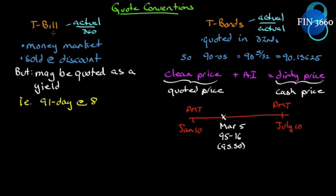Now let's look at quote conventions. We'll contrast the T-bill — a money market instrument where accrued interest is calculated on the Actual/360 convention — versus a T-bond, where it's calculated on the Actual/Actual convention. T-bills are typically sold at a discount. When quoted as a yield, that yield is expressed as a percentage of face value, not a percentage of the price you pay. Since they're sold at a discount, your true yield will be higher.